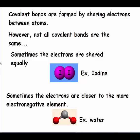Covalent bonds are formed by sharing electrons between atoms, compared to ionic when they transfer electrons. However, not all covalent bonds are the same.